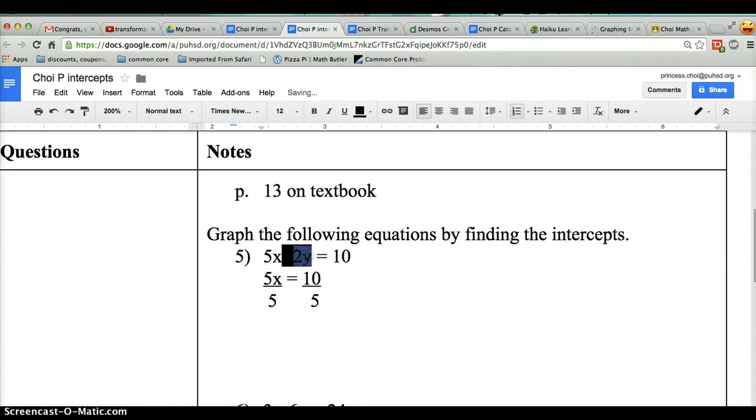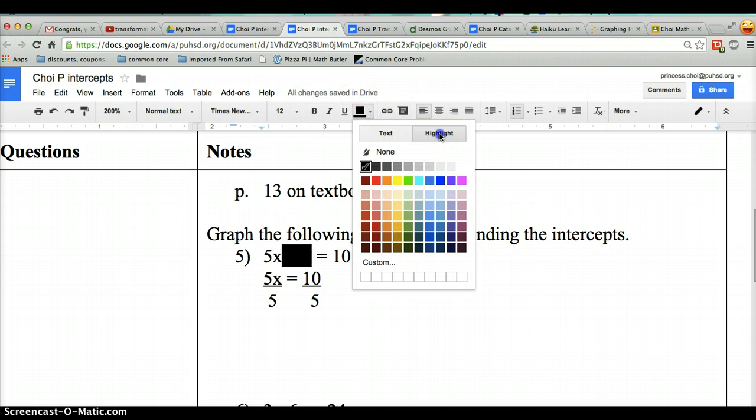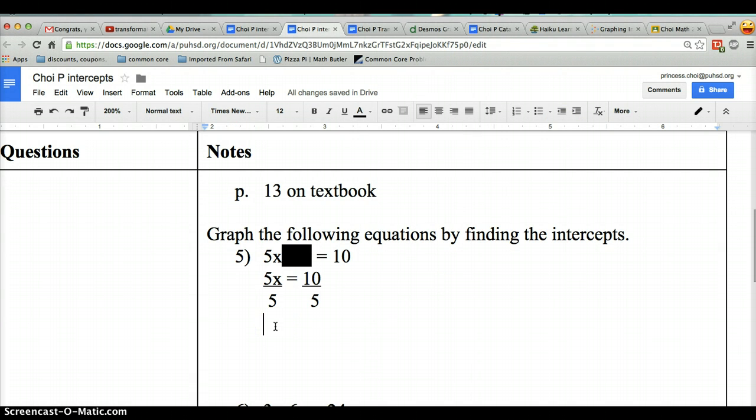How did I block it? I highlighted it, and I go into highlight over here, and then I picked black color, the color black. So then now we have x equals 2. So that is my x-intercept. Now let's go ahead and find my y-intercept. And you know what? Just to be clear, let me make a note over here saying that this is x-intercept. And then over here I'm going to say y-intercept.